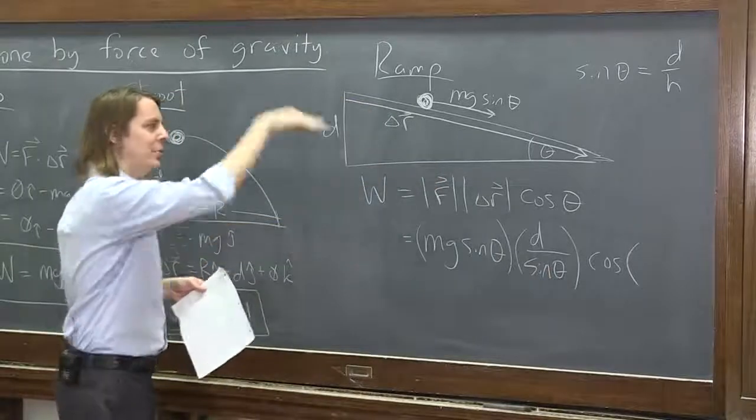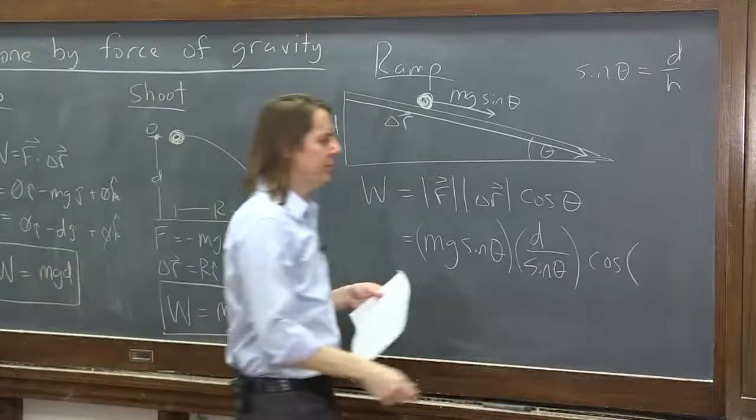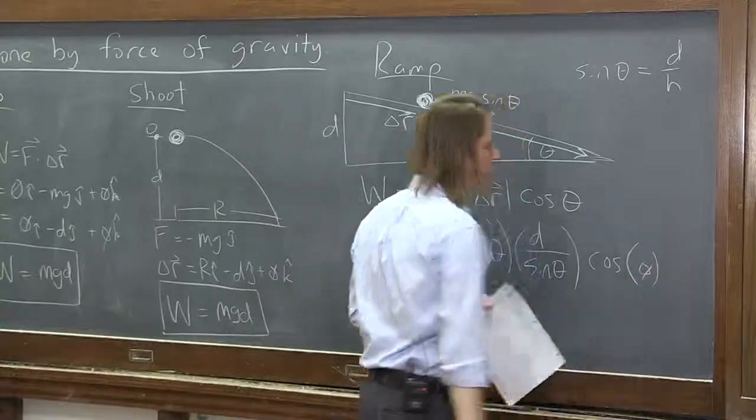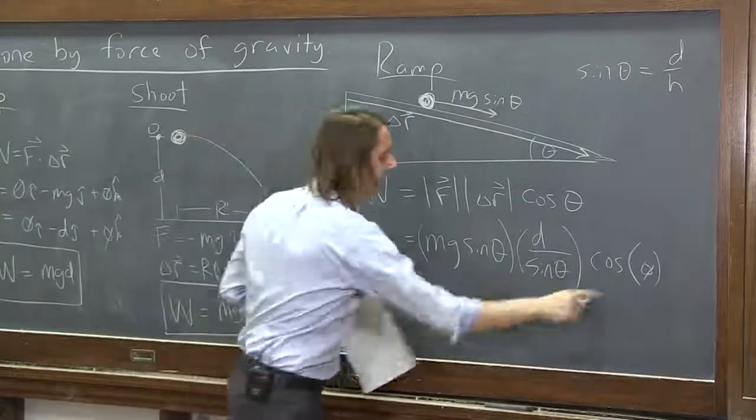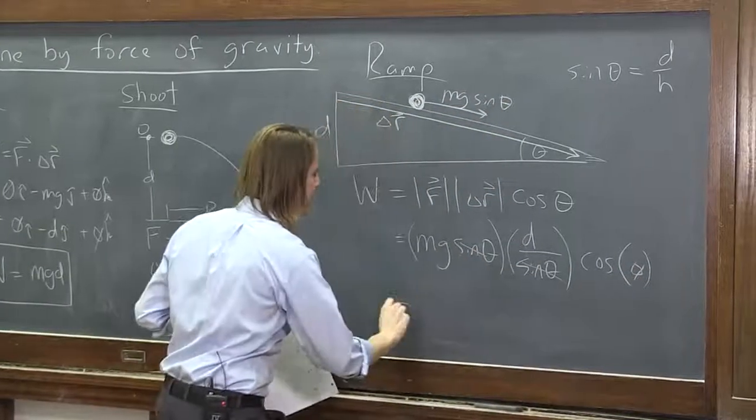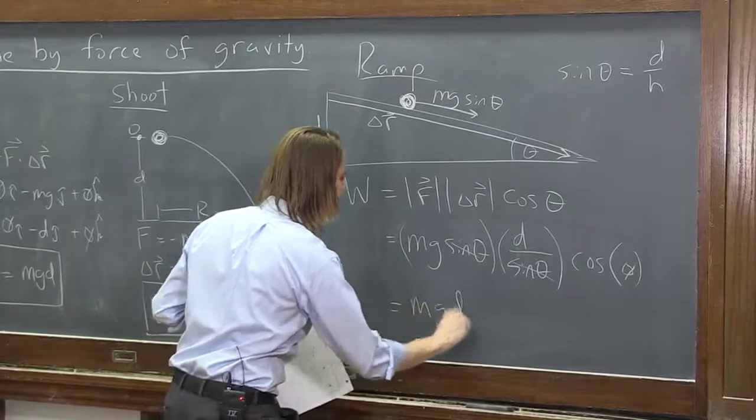Cosine. What's the angle between them? Zero. I'm doing this down the plane. I'm not breaking things into components. Cosine is zero. And that's just one. So that's one. And those two cancel. And you get the same thing. MgD every time.